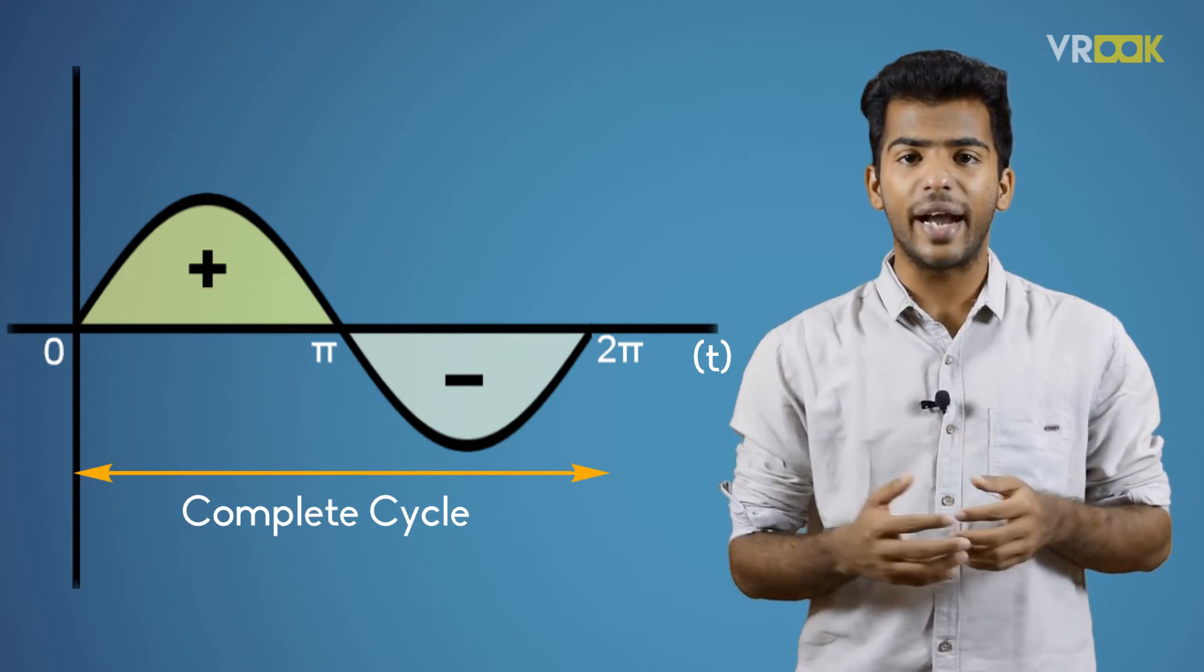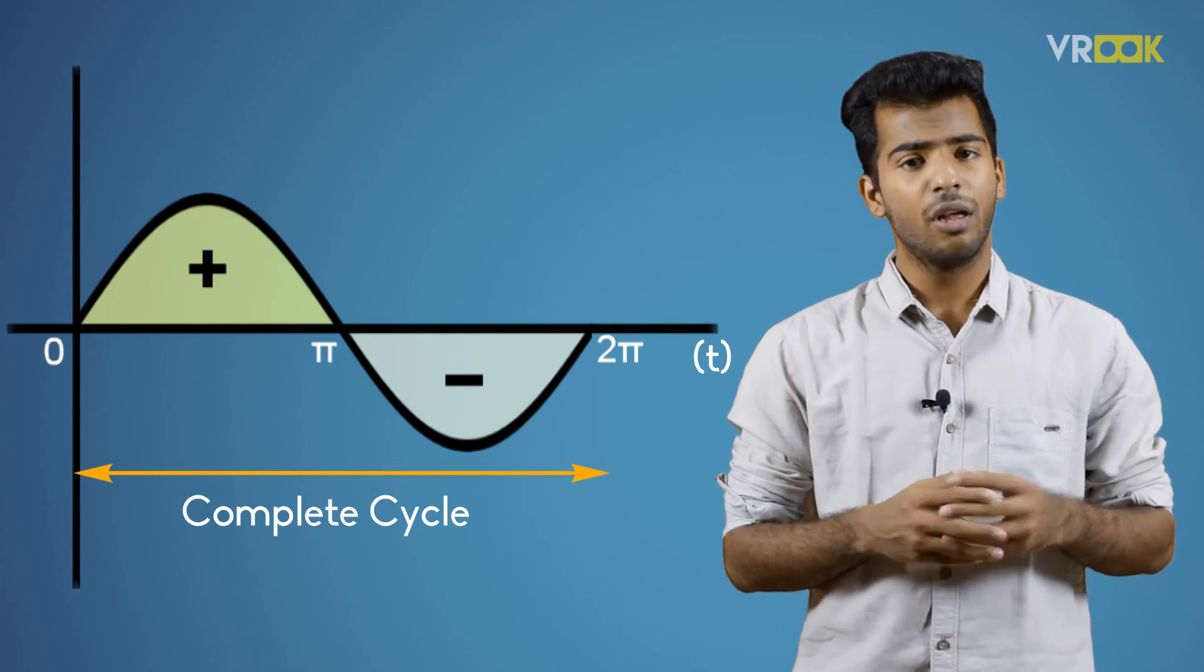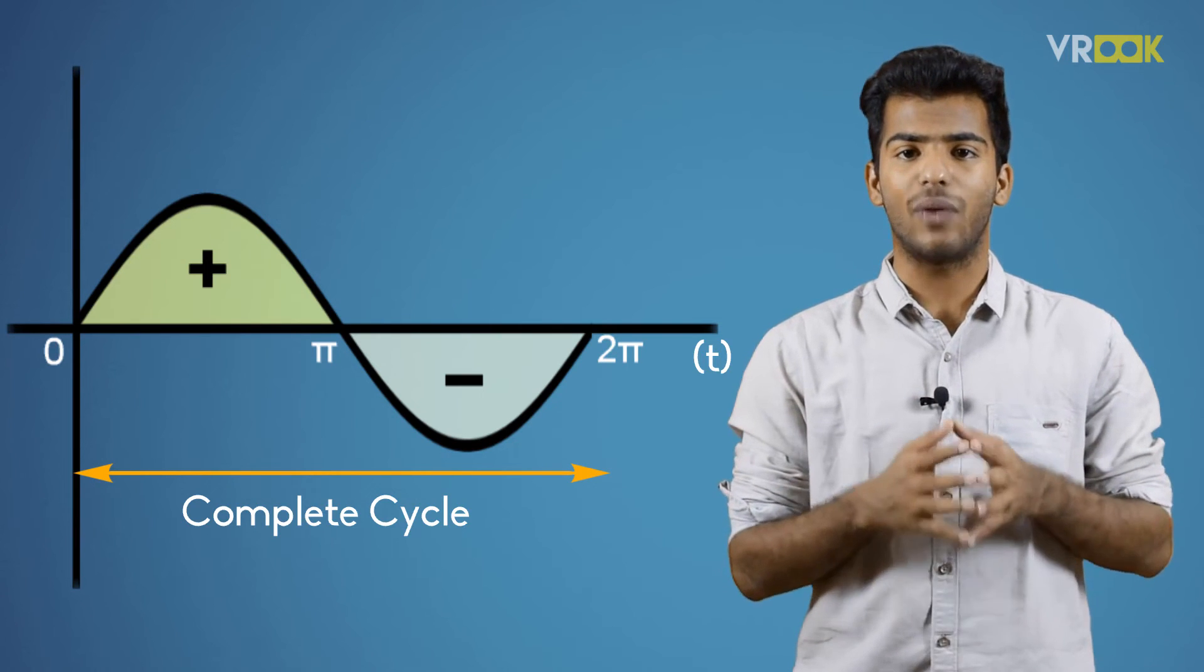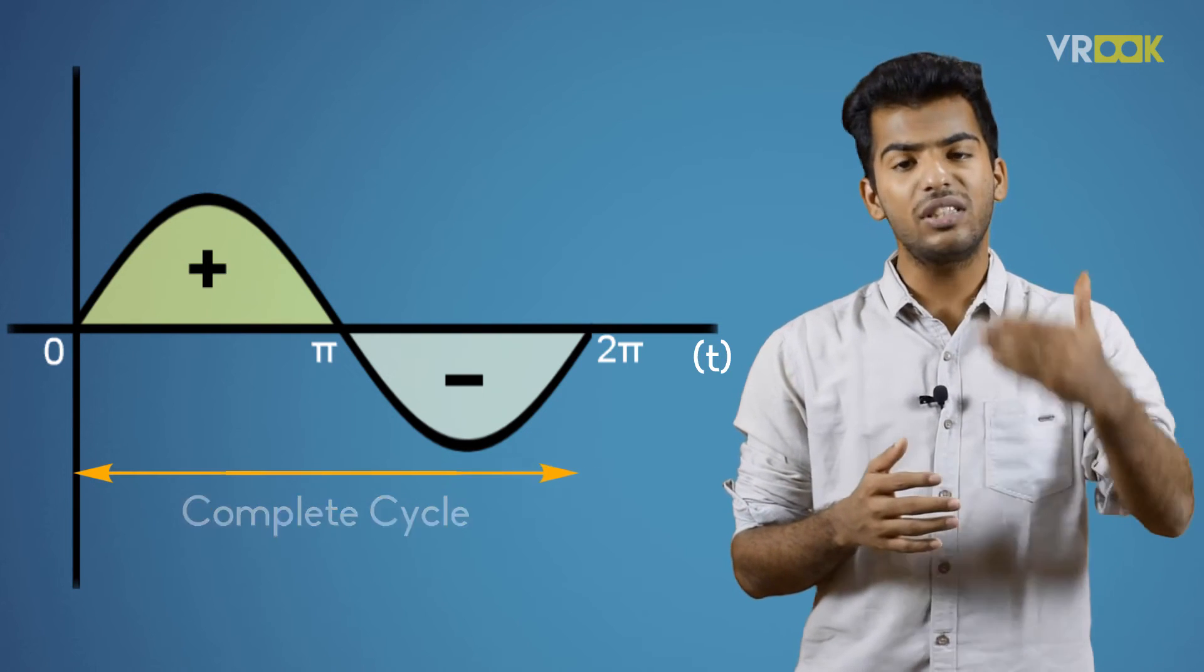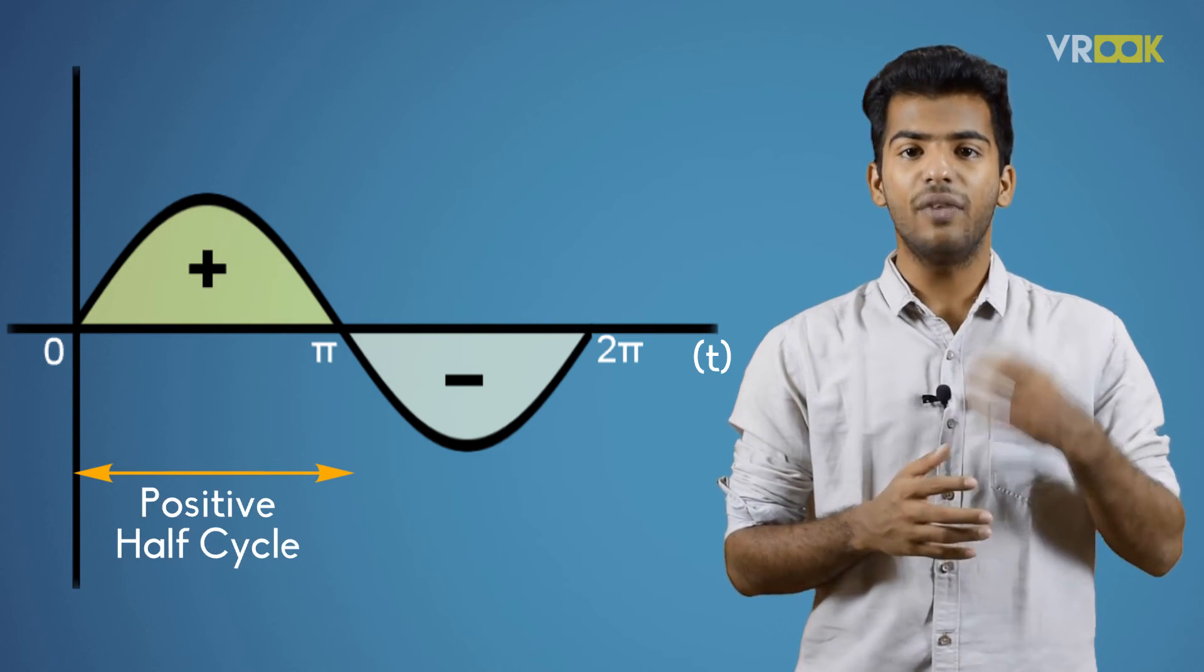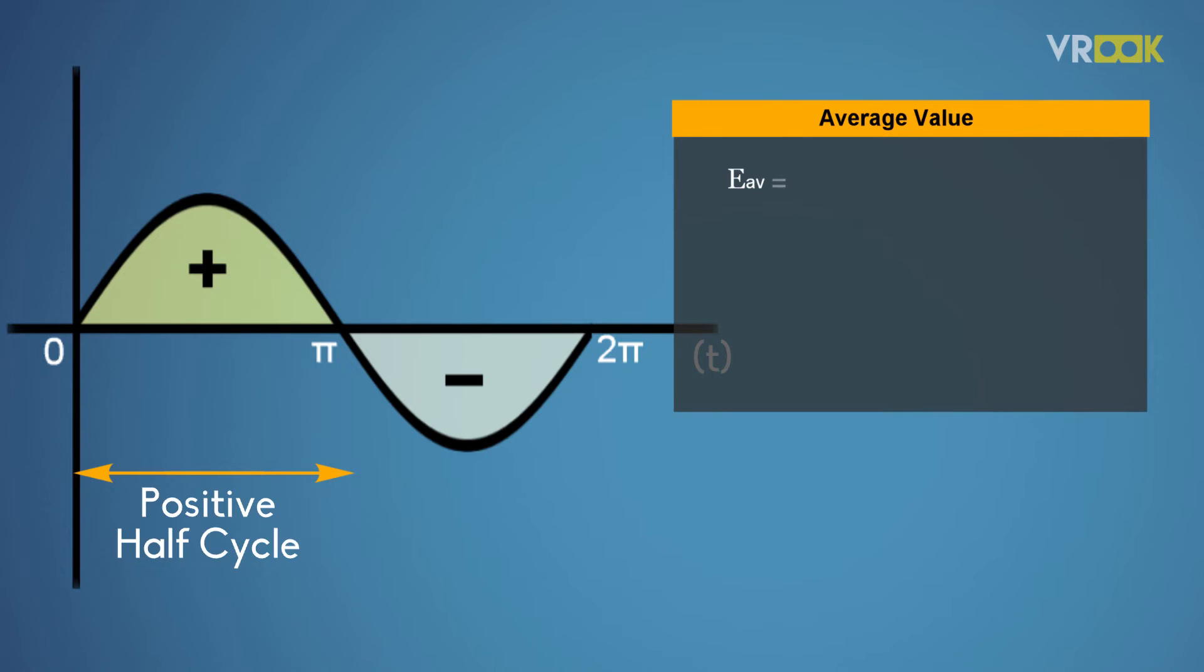So we should find another way to calculate the average value. We can do that by integrating all the instantaneous values in only the positive half cycle. Once we do that integration, we will get the average value as EAV equals area of half cycle divided by base, that is pi radian.